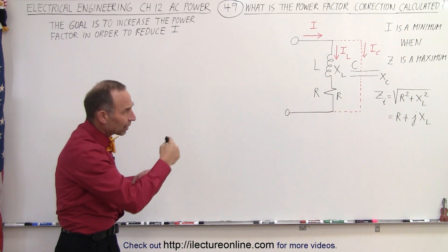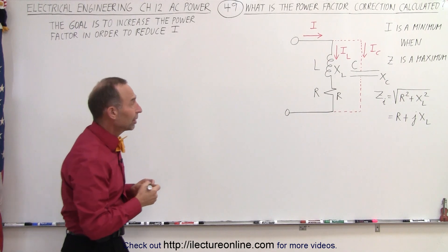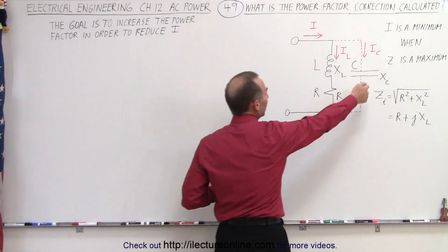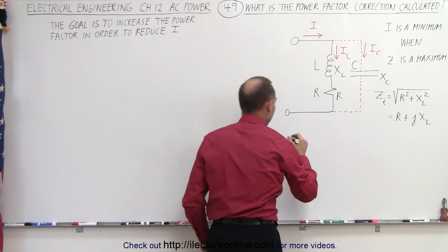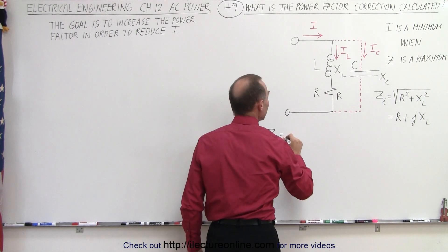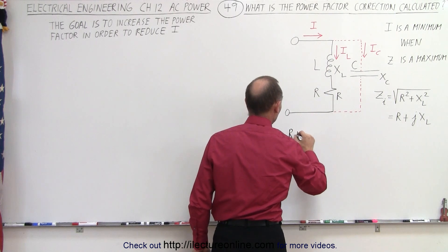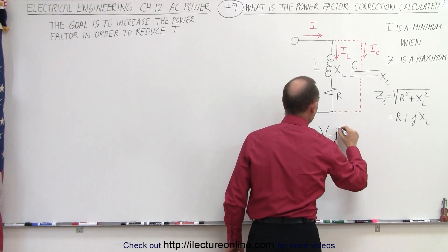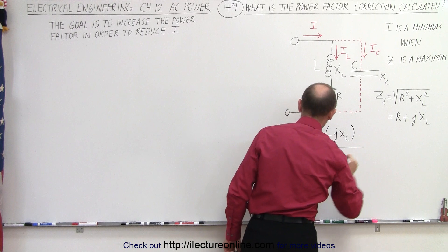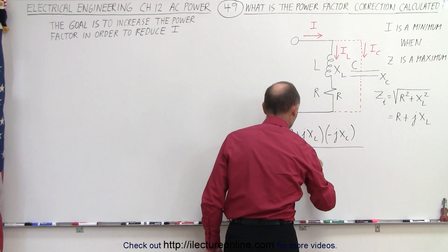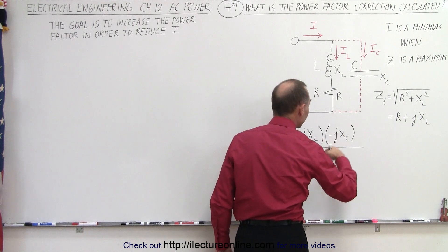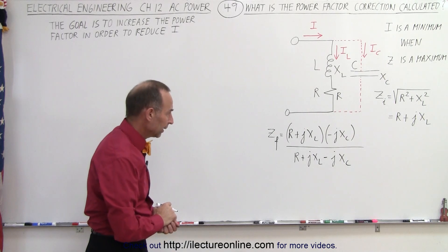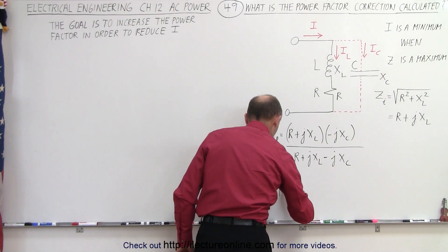Now we're going to add the capacitor. To calculate the final impedance we're going to use the product-over-sum method since the two branches are in parallel. So Z_final is going to be equal to (R + jX_L) multiplied by (-jX_C), all divided by the sum of the two branches: (R + jX_L) plus (-jX_C).